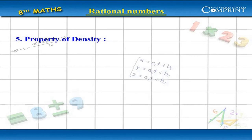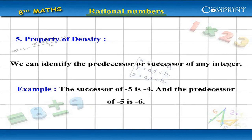5. Property of Density: We can identify the predecessor or successor of any integer. Example: the successor of minus 5 is minus 4, and the predecessor of minus 5 is minus 6.